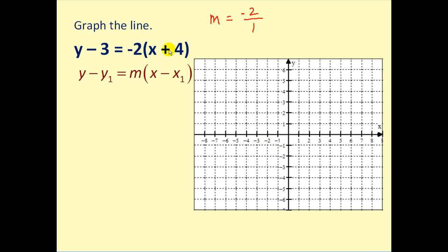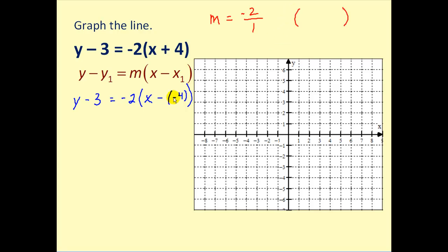The next thing we need to do is identify the point on the line. The issue is where we see x plus four, but the form requires x minus something. So we rewrite this as x minus negative four. Subtracting a negative is the same as adding a positive. This tells us the line contains the point where the x-coordinate is negative four and the y-coordinate is positive three.